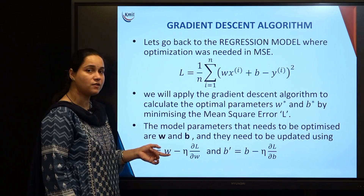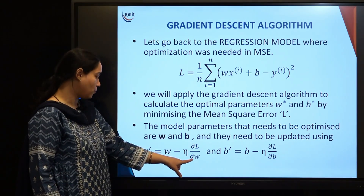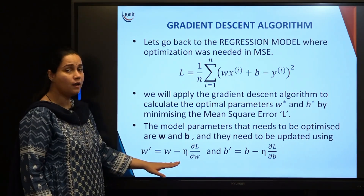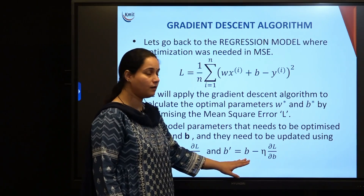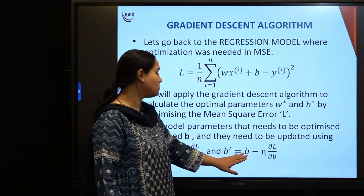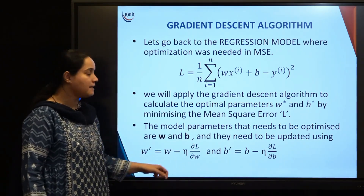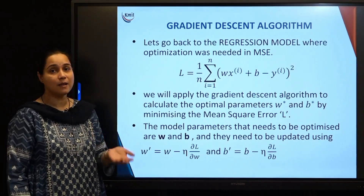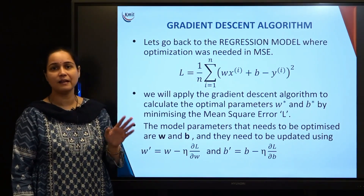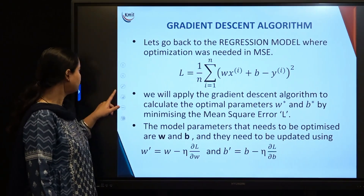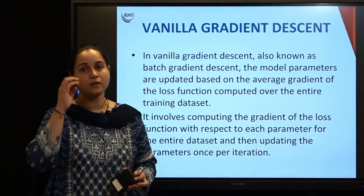We use partial derivatives here because L depends on two parameters — weight and bias. First we differentiate with respect to weight and update the weight parameter. Similarly, the newly updated bias is: b' = b - eta * (∂L/∂b). Eta is the learning rate, a hyperparameter that does not directly affect model working but indirectly helps fine-tune the model.